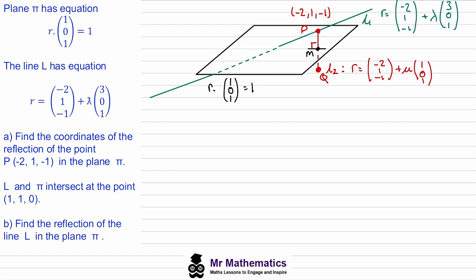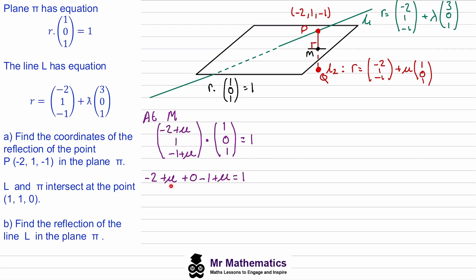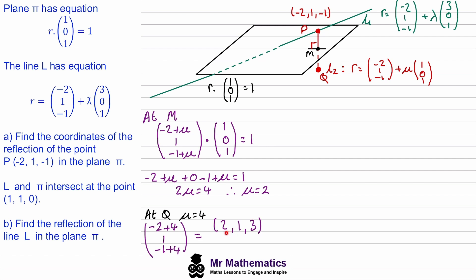At M, the general position vector of line L2 is dotted with one, zero, one to equal one. We dot these two together and solve for mu: moving negative three to the right-hand side and collecting the mu terms gives two mu equals four, therefore at M mu equals two. Since mu equals two to go from P to M, to go from P to Q we substitute mu equals four into the equation. This gives us the coordinates at point Q: x, y, z — so Q is at two, one, and three.